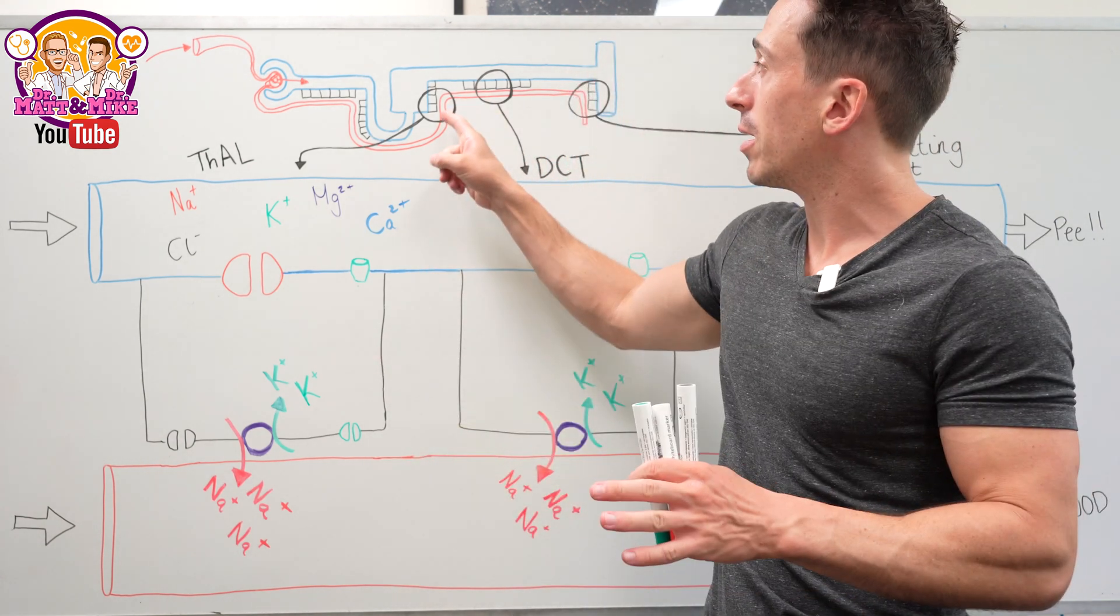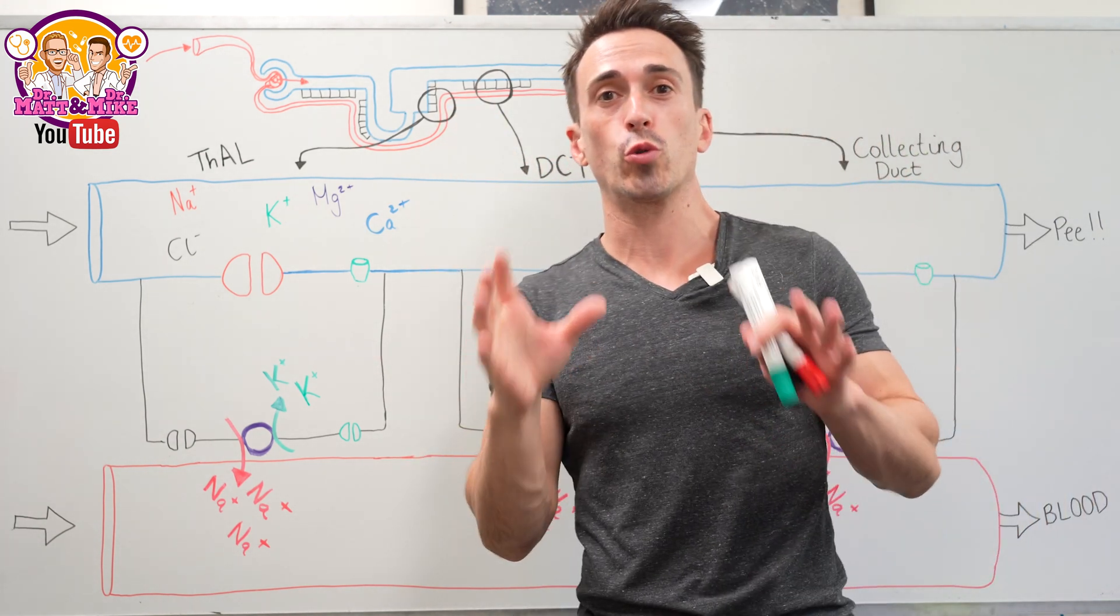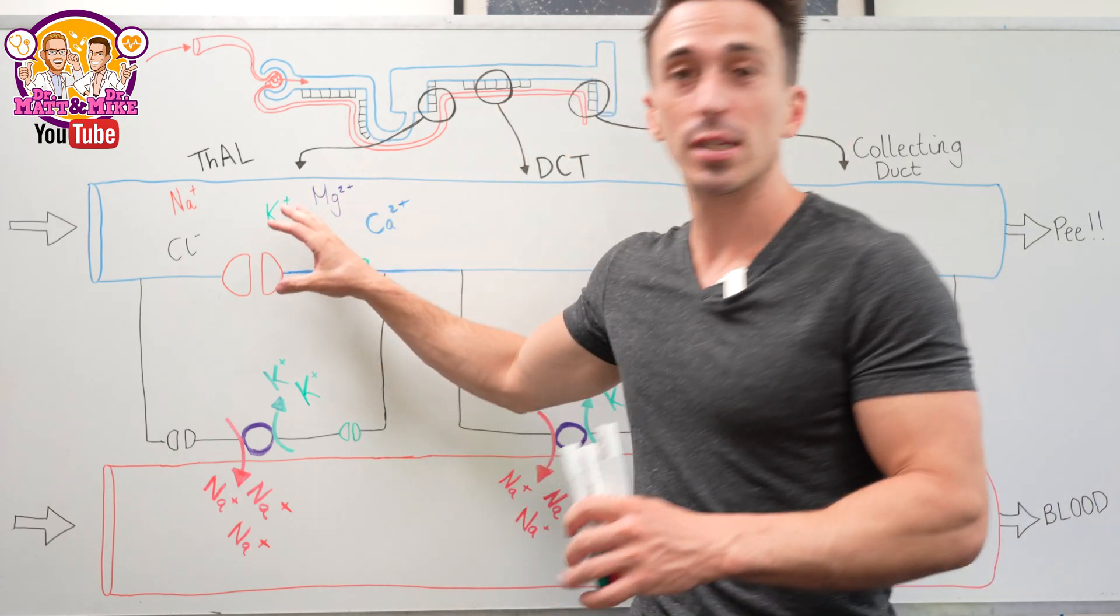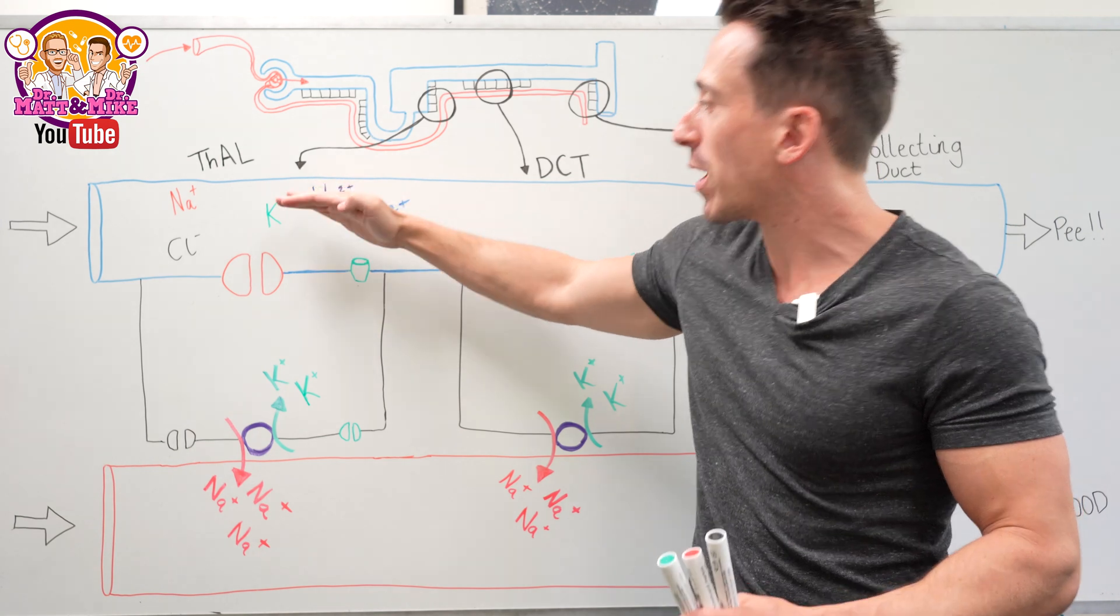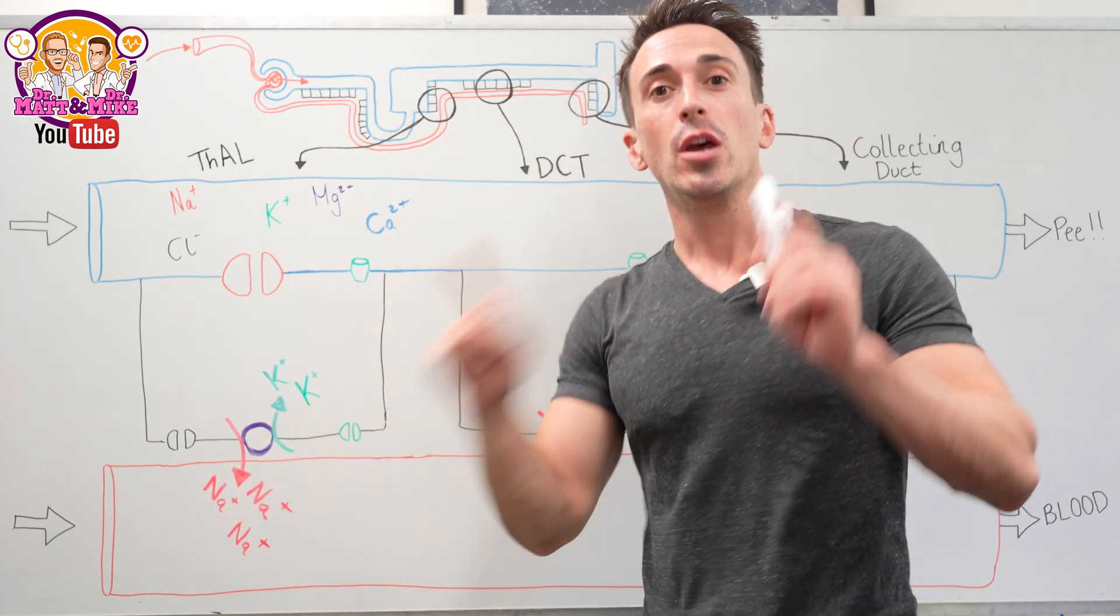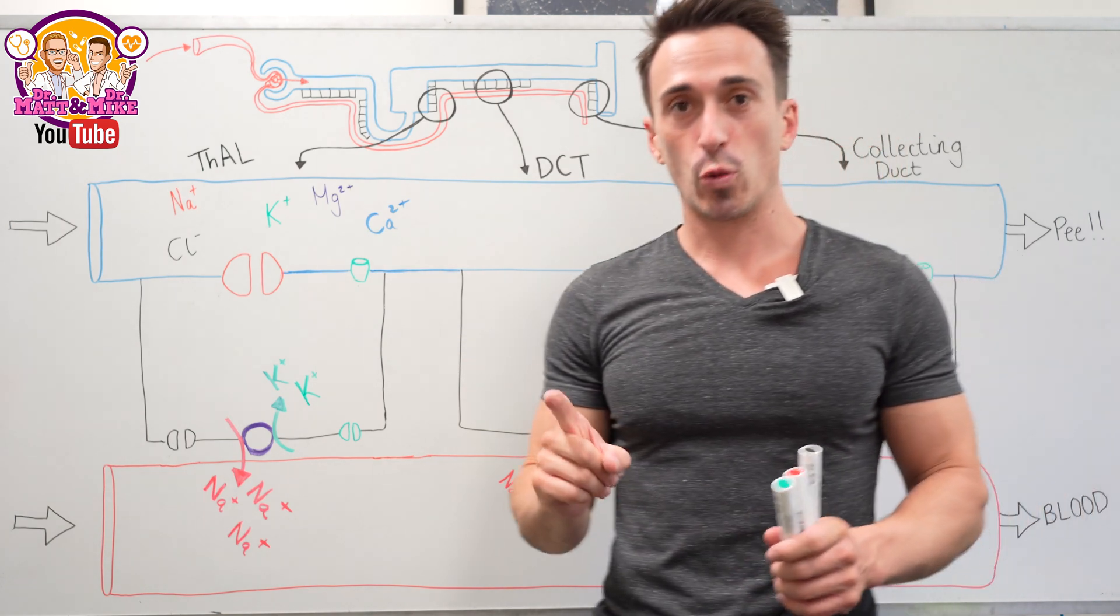The cells of the thick ascending limb of the loop of Henle play a really important role in taking ions that have been filtered from the blood into the tubules of the nephrons and reabsorbing them back into the blood. How does this process work?